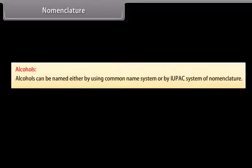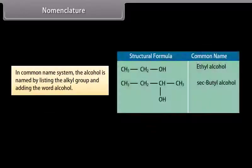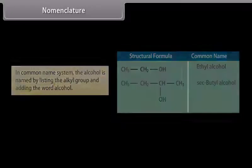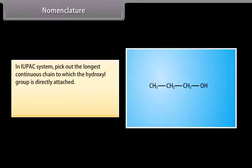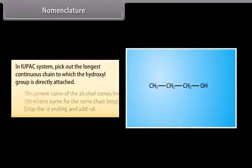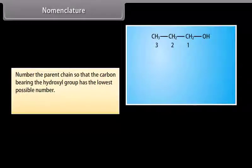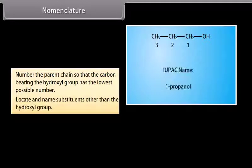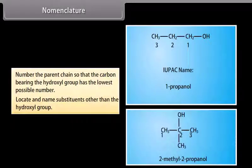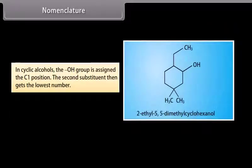Alcohols can be named either by using the common name system or by the IUPAC system. In the common name system, alcohol is named by listing the alkyl group and adding the word 'alcohol.' In IUPAC, pick the longest continuous chain to which the hydroxyl group is directly attached, drop the '-e' ending and add '-ol,' and number the chain so the carbon bearing the hydroxyl group has the lowest possible number. Example: 2-methyl-2-propanol. In cyclic alcohols, the hydroxyl group is assigned C1; for example, 2-ethyl-5,5-dimethylcyclohexanol.